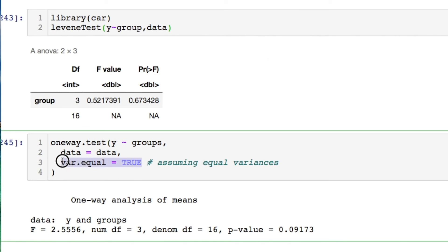And here's the one-way test also. Just look at this. Variance equals true, assuming it's equal variance. You could also have this as false. It does another test. I can't remember the name.